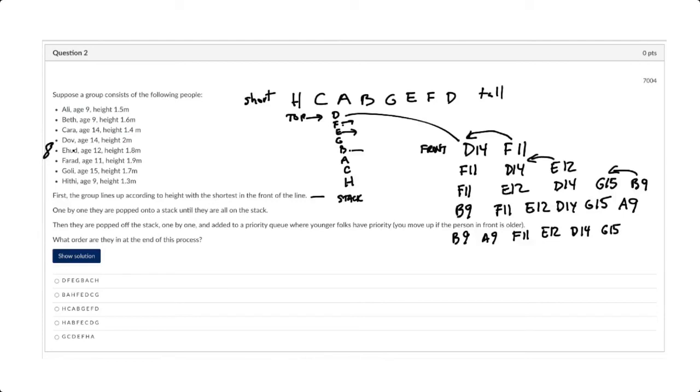And then I have Kara, who's 14. So Kara at 14 shows up here. Kara gets to move up one place to here. So my Q looks like this.